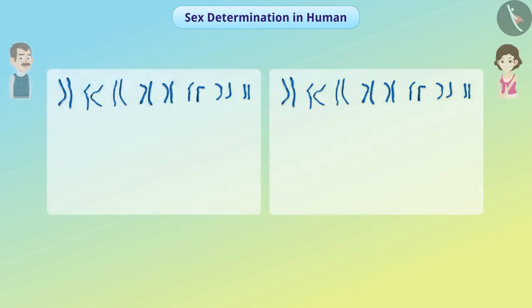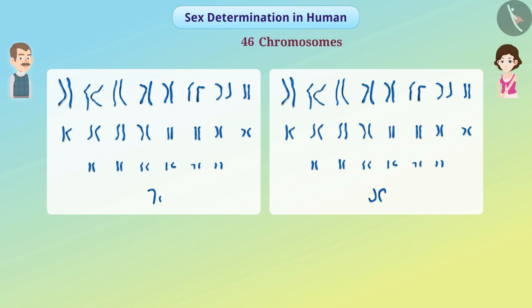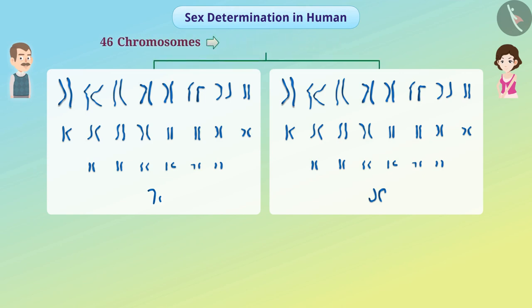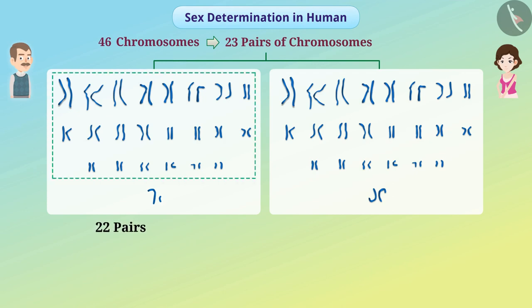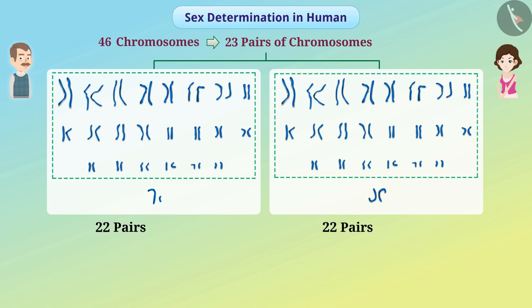Humans have a total of 46 chromosomes which make 23 pairs of chromosomes. Out of these, 22 pairs of chromosomes, i.e. 44 chromosomes, are the same in male and female. They have no role in determining the sex of the zygote. These are called somatic chromosomes.